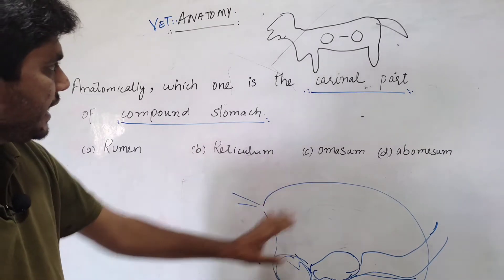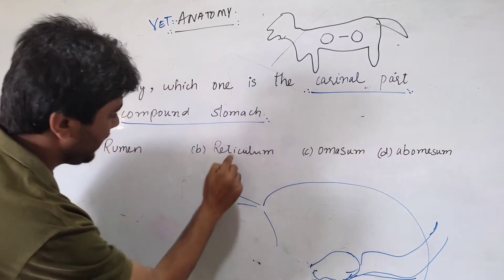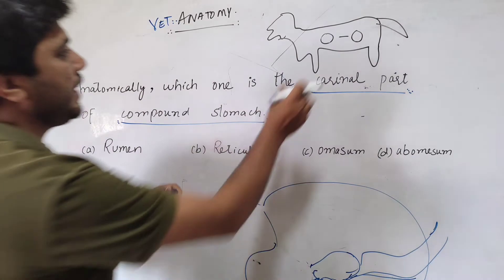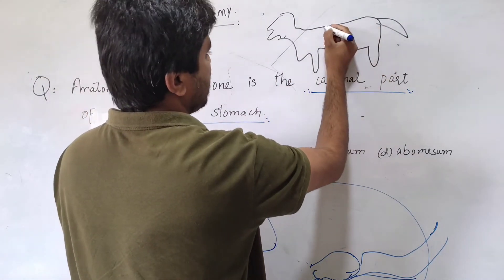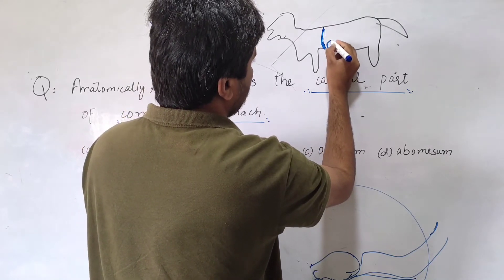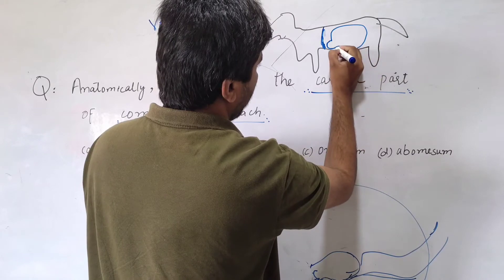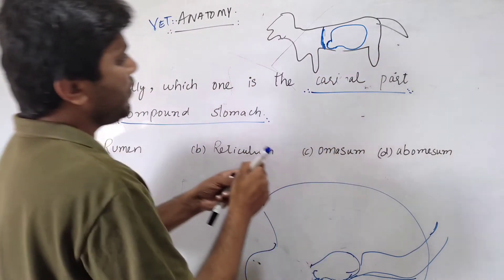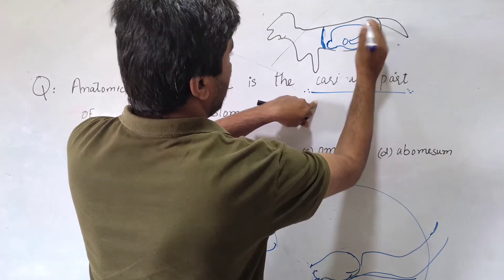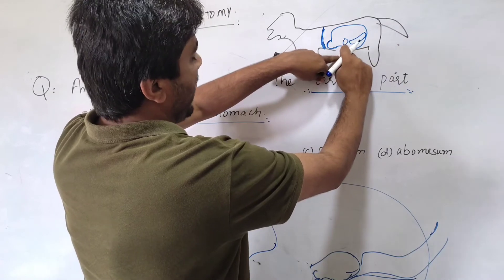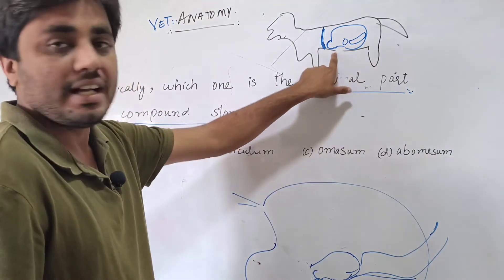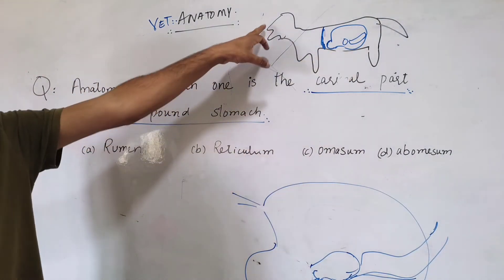But structurally, where you will see, this organ which is reticulum, this is a little cranial. If you draw here, for example, this is the diaphragm. So this part which we are calling reticulum is very near to the diaphragm. So if this is omasum and abomasum here, this rumen, this omasum and this abomasum are actually caudal compared to the reticulum. So reticulum is nearest toward the skull side.